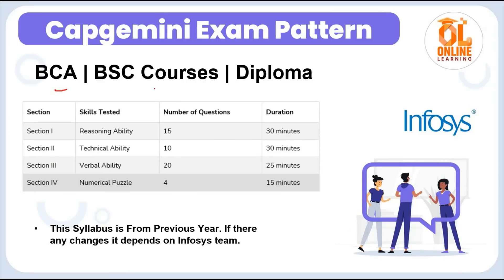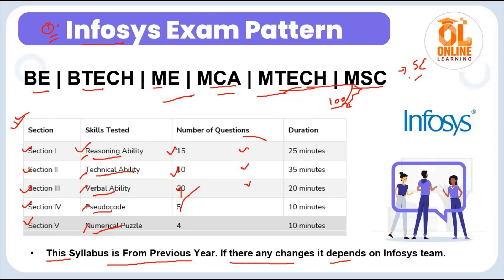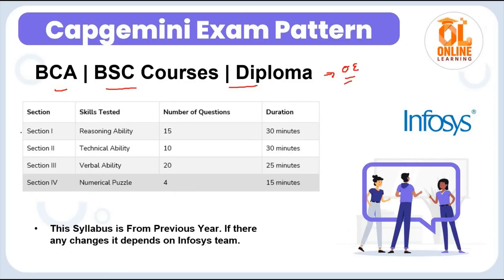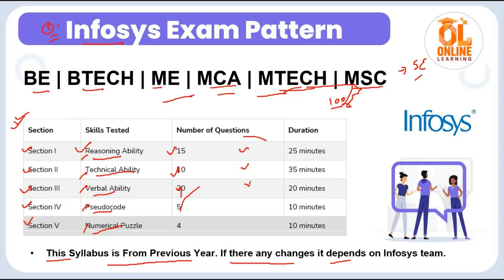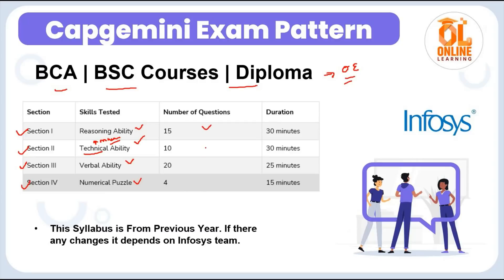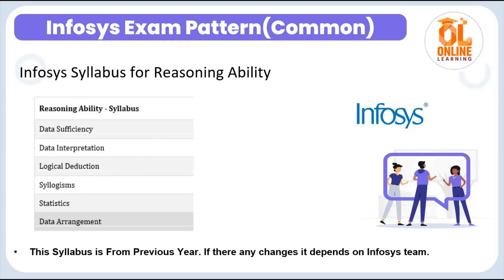The next pattern is for BCA, B.Sc, and Diploma candidates — the Operation Executive role. There are four sections: Section 1 — Reasoning, Section 2 — Technical, Section 3 — Verbal, and Section 4 — Numerical Puzzles. There is no pseudocode section for OE. Technical here means mathematical ability — don't confuse this. The number of questions are 15, 10, and 24 respectively, but the time duration differs from the SE pattern. This pattern is expected to be followed for the Operation Executive examination.